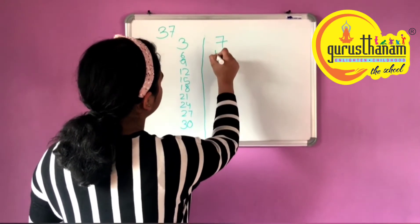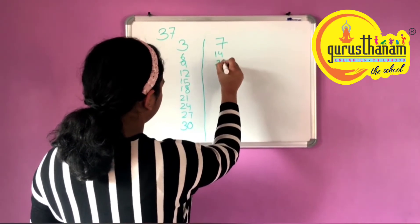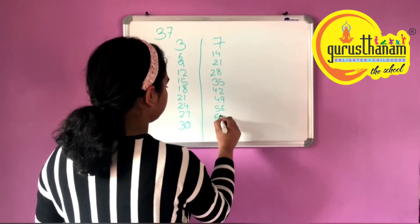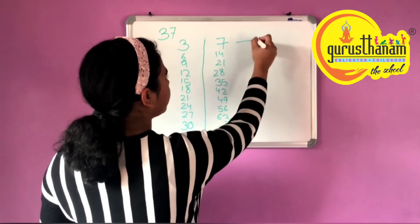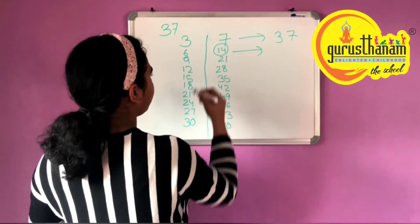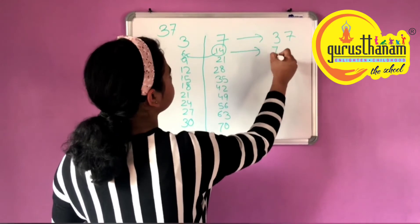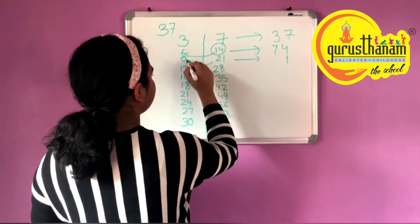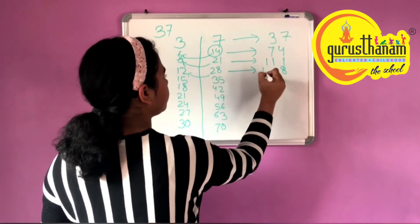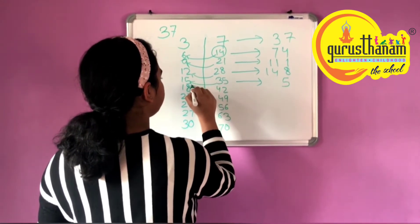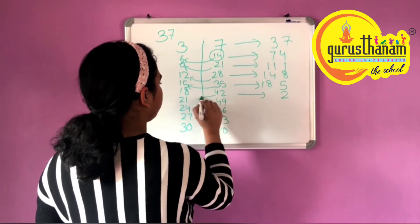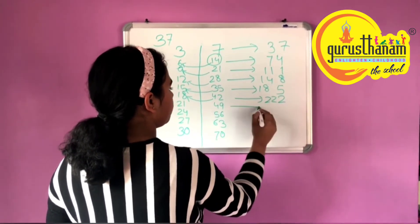30. 7 tens are 70. I write 7, then 3. The number there is 1, so I write 1. That gives 74. I write 1, giving 11. I write 8, giving 14. 5 gives 82. 2 and then 4, giving 22. 90.